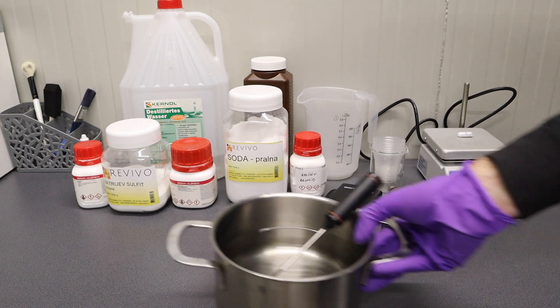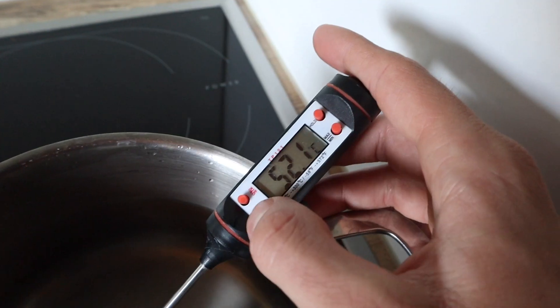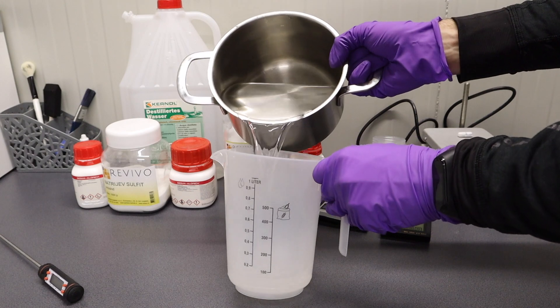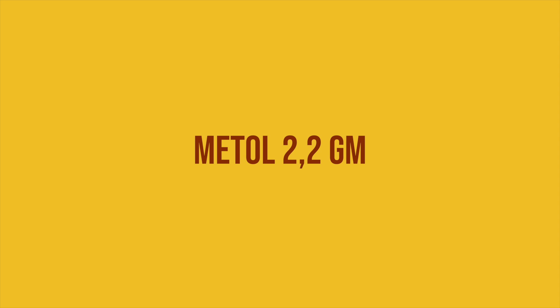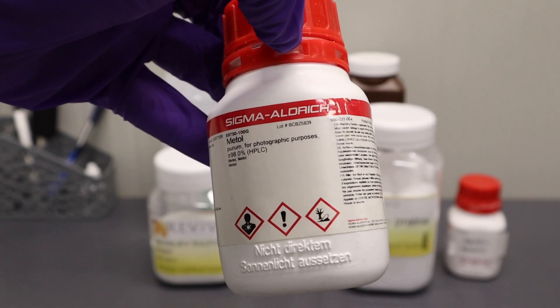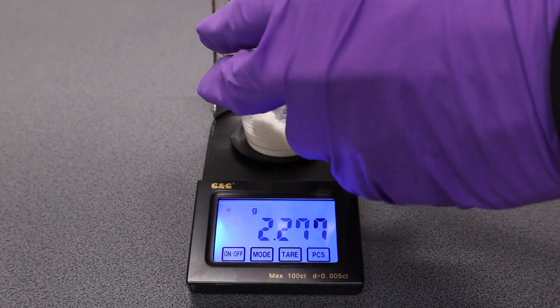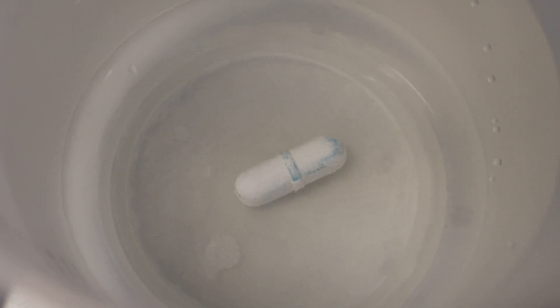Start by measuring 500 milliliters of hot distilled water that needs to be heated to 52 degrees Celsius or 125 degrees Fahrenheit, then weigh 2.2 grams of Metol and slowly add it to the water. Time to turn on the magnetic stirrer.